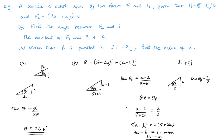Hopefully that makes sense — if R is parallel to 3i plus 2j, it goes in the same direction, so I took the angle from the horizontal. You could equally have taken the angle from the vertical, but taking it from the horizontal is a little bit easier. That completes both examples.